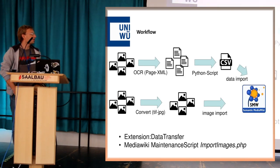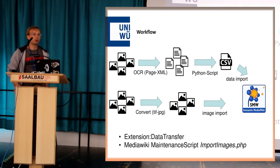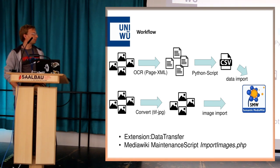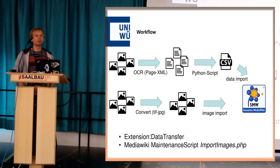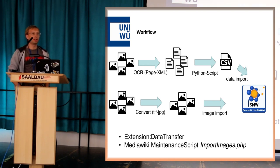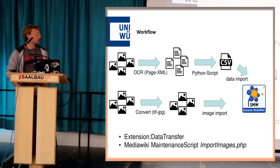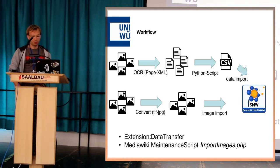That's our workflow more or less. We do the scans with lots of images and the OCR generates a special output — it's a page XML. I wrote a small script so that I can import this data via the data import extension into SMW. We also scan high-resolution TIF files; each file is approximately 100 megabytes depending on the scan. I automatically convert them to other resolutions, reduce the image size, and also push them into SMW.